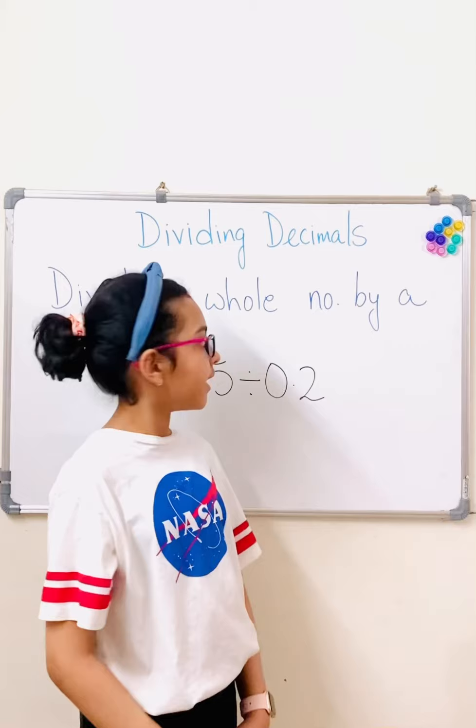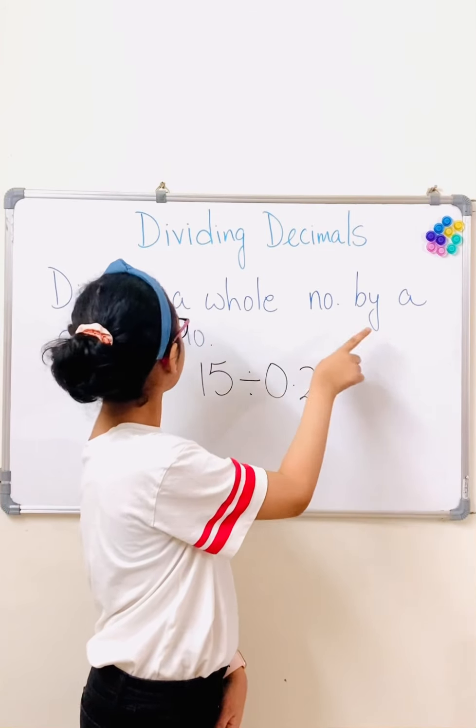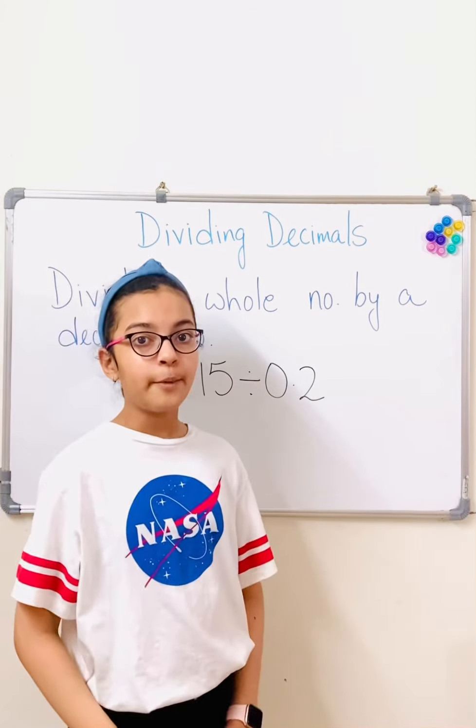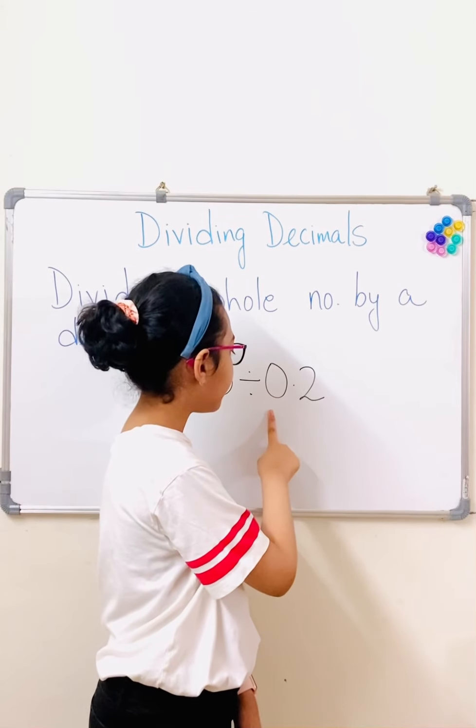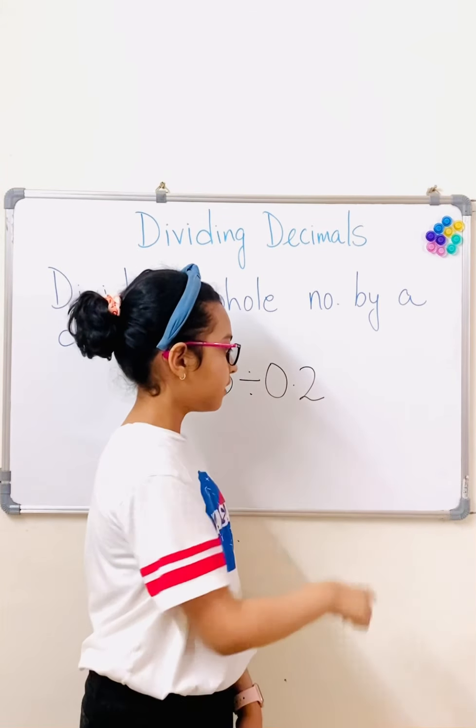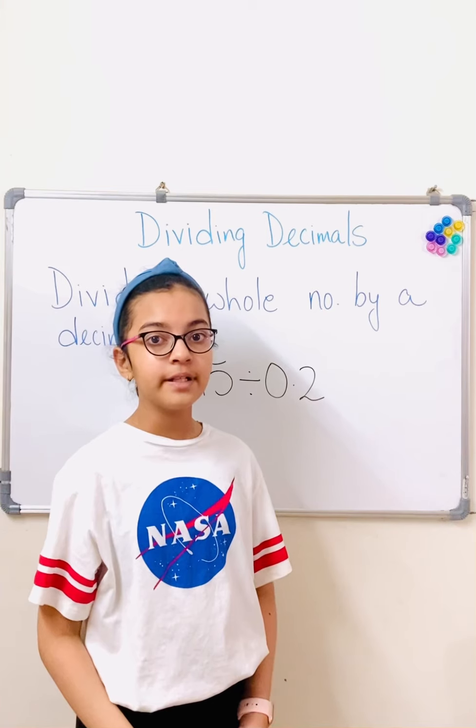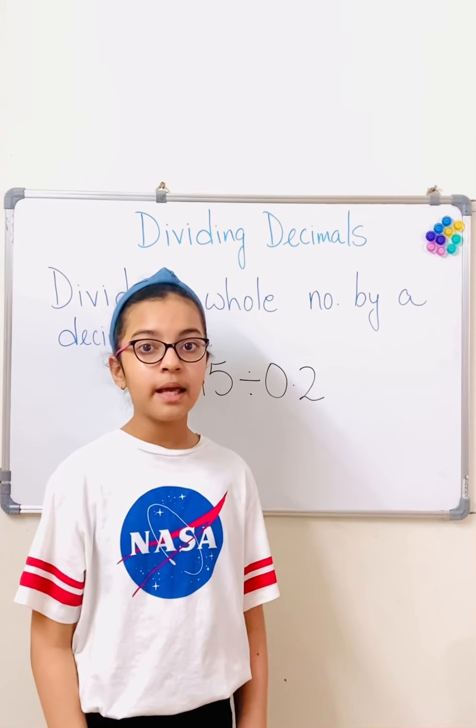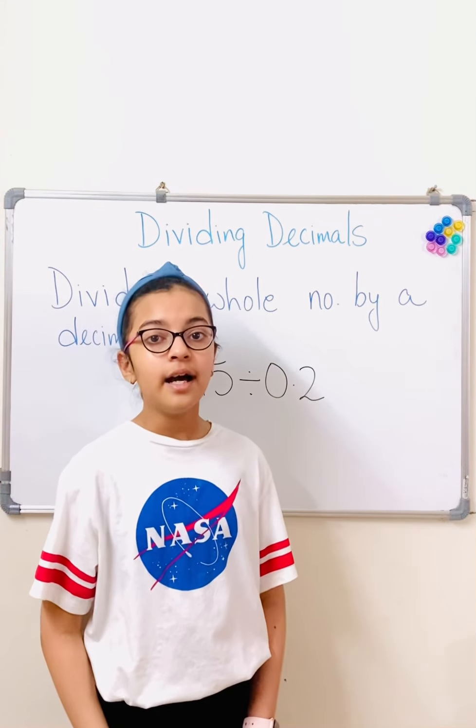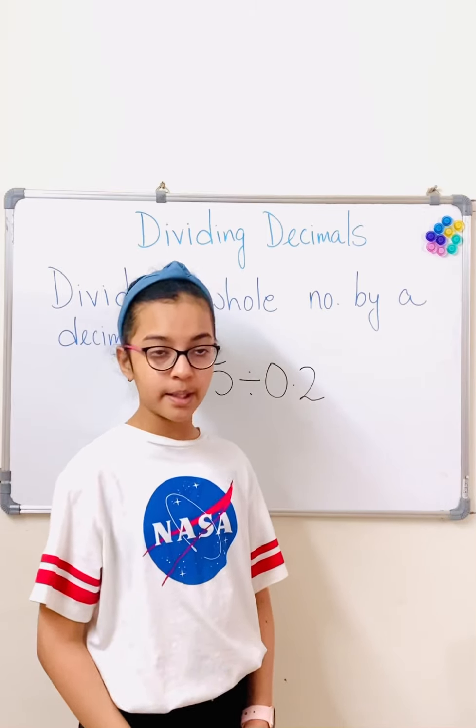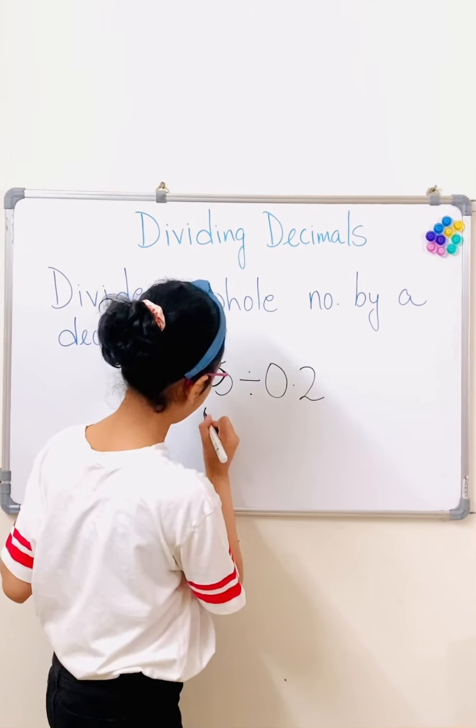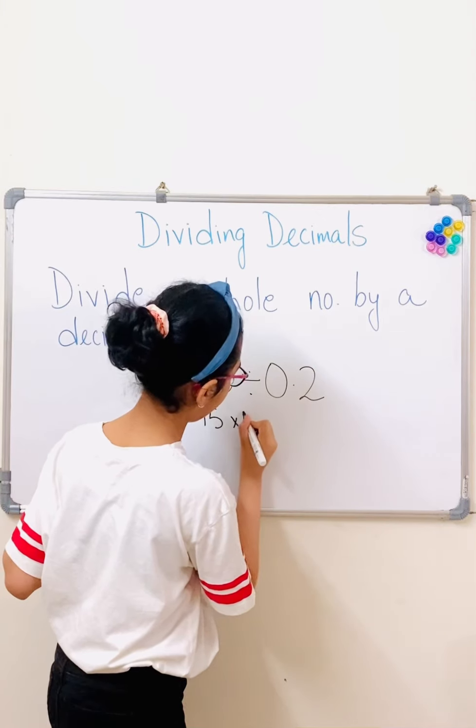And the first one is, divide a whole number by a decimal number. So we can take 15 divided by 0.2. So first up, our first step is, we need to multiply both the numbers by 10 until we get a whole number. So we can do 15 into 10.